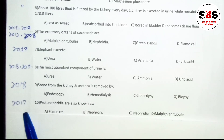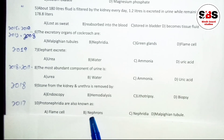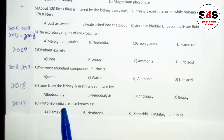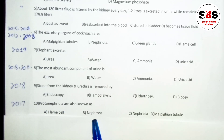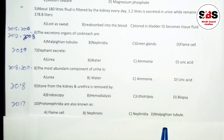Question number 10 (asked in 2017): protonephridia are also known as what? Options are: flame cells, nephron, nephridia, or Malpighian tubules. The correct answer is flame cells. Note: nephron is the structural and functional unit of the kidney; nephridia are earthworm excretory organs; Malpighian tubules are the cockroach excretory organ.